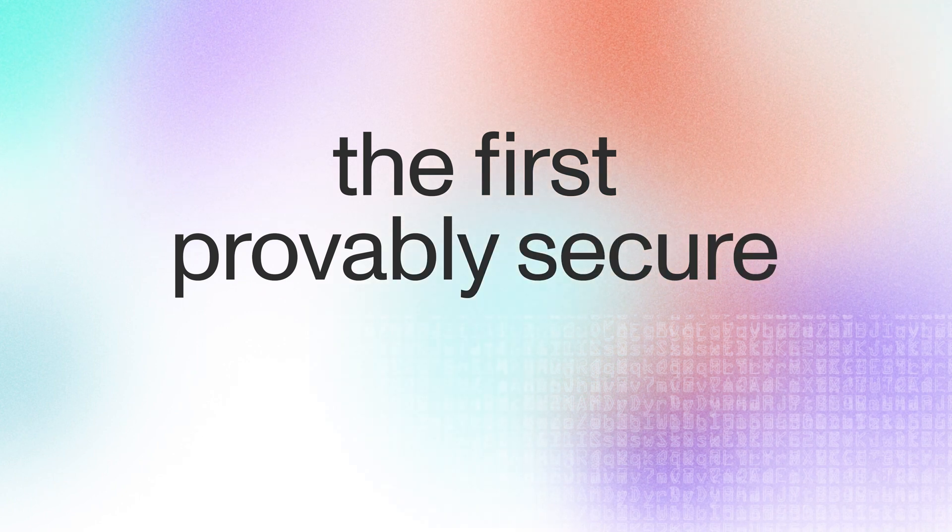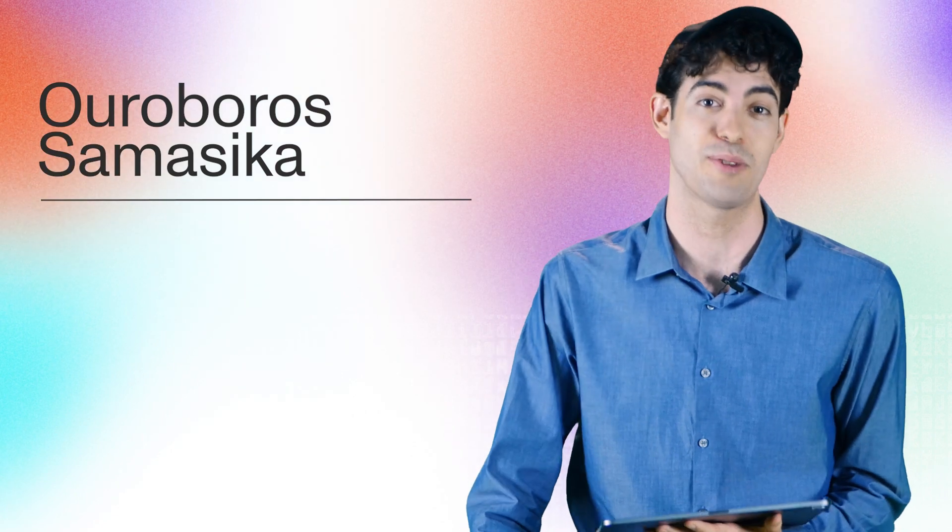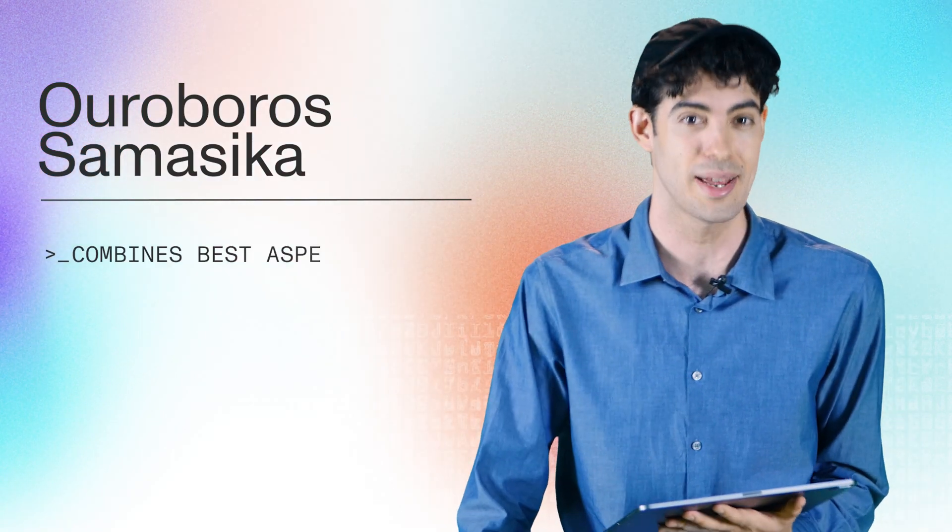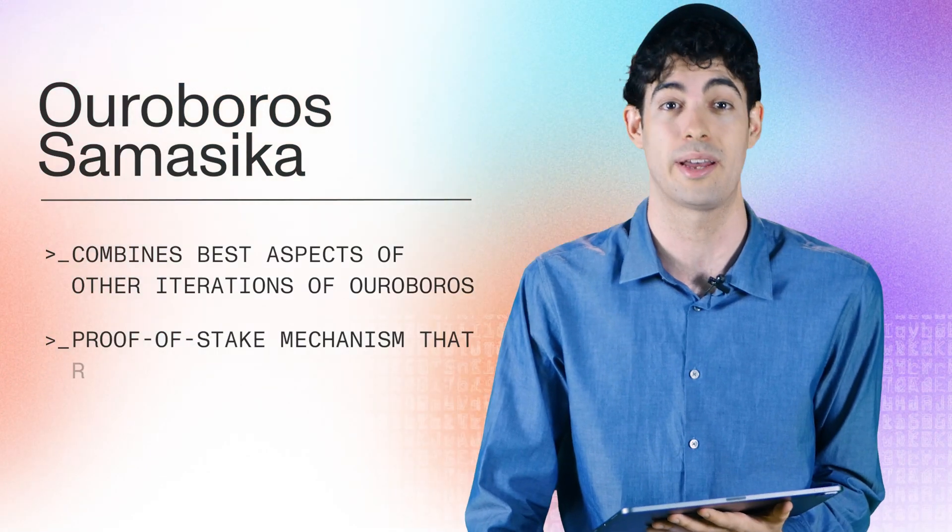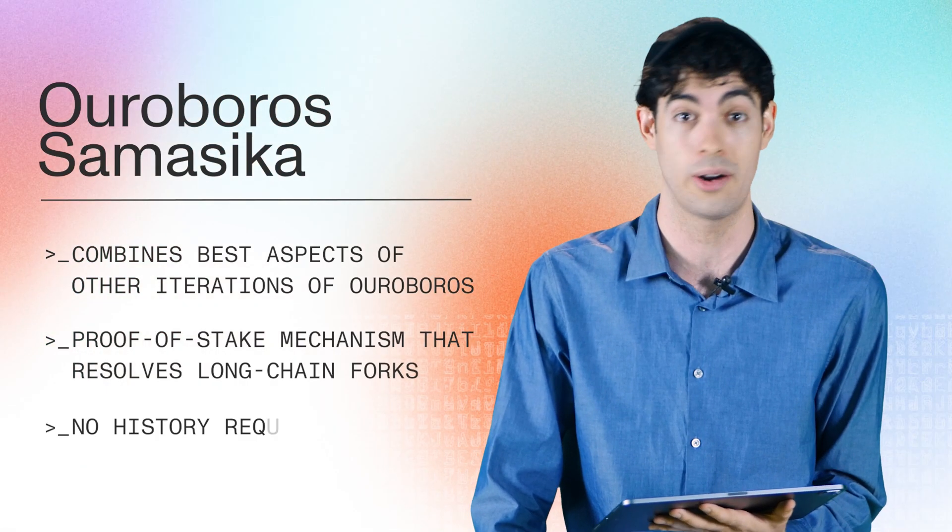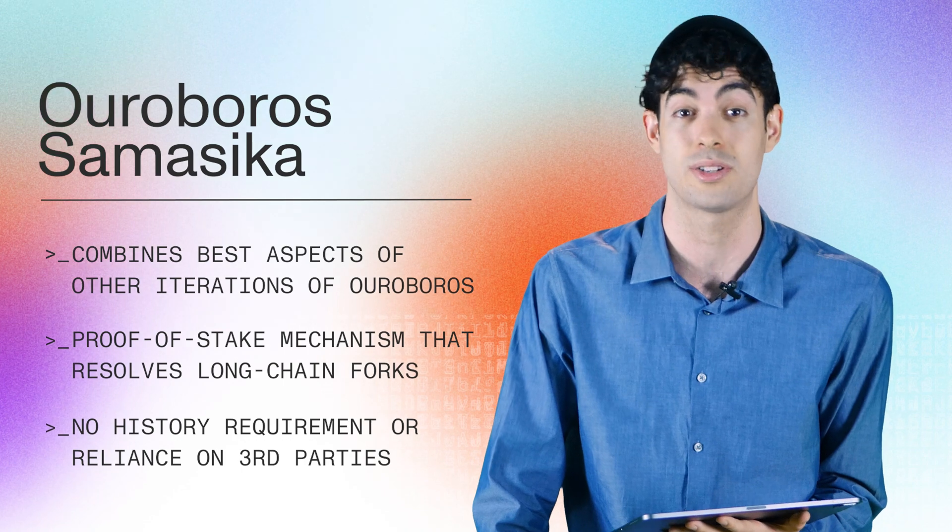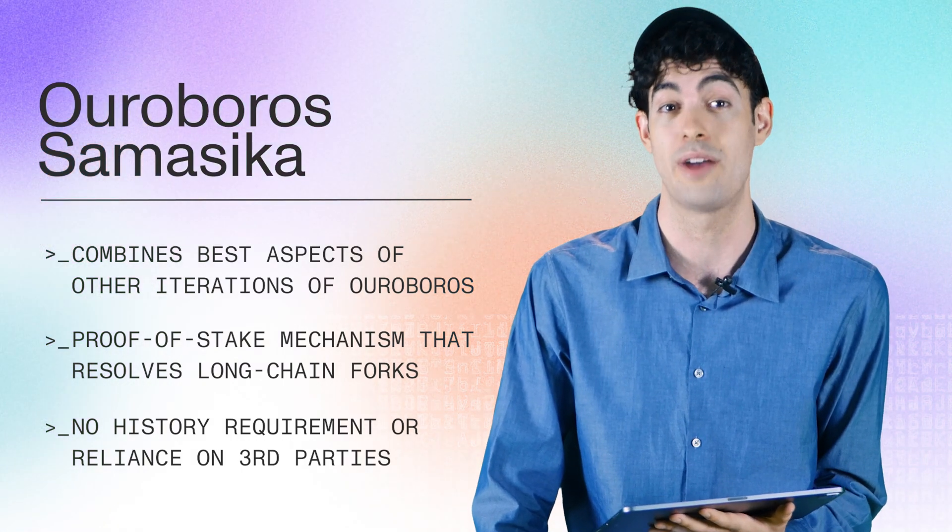Proof-of-stake is an energy-efficient method for achieving consensus, and Ouroboros is the first provably secure proof-of-stake protocol. Mina builds on top of Ouroboros to create Ouroboros Samasica, a provably secure proof-of-stake protocol that combines the best aspects from every iteration of Ouroboros to deliver a proof-of-stake mechanism that can resolve long-range forks without requiring history or risking the centralization of relying on third parties to provide fork information.